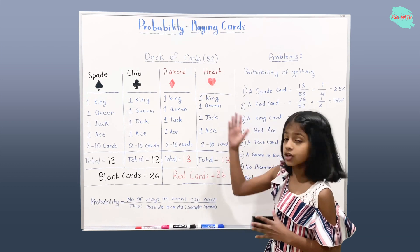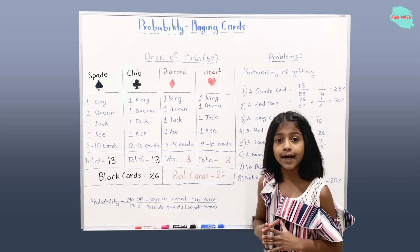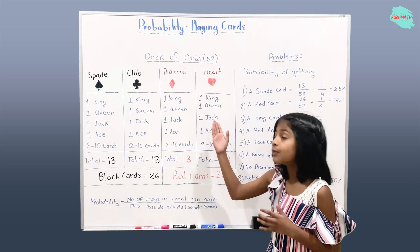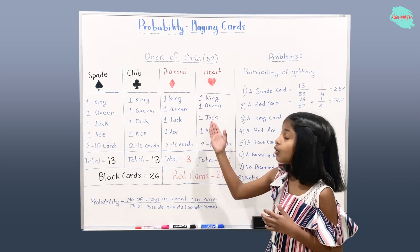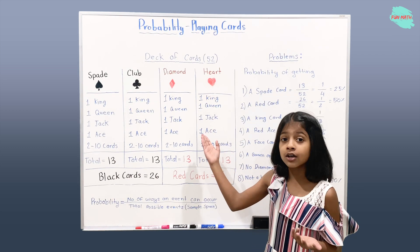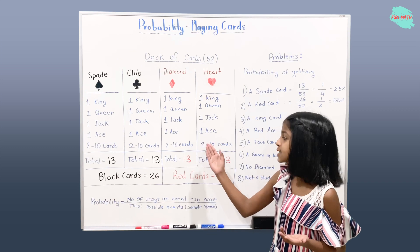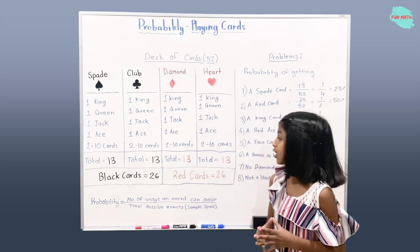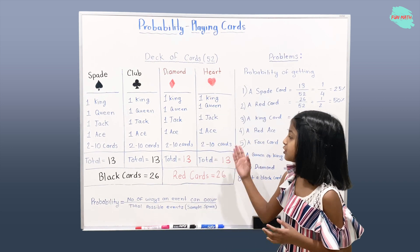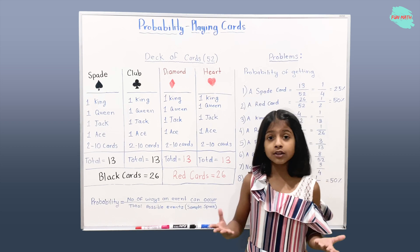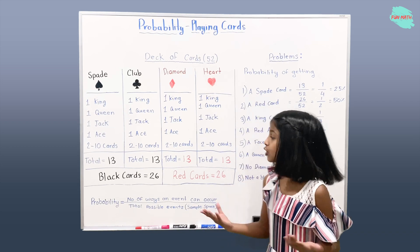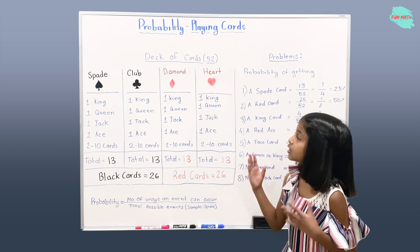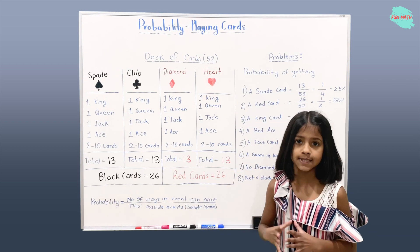In Heart Suit we have one King, one Queen, one Jack, one Ace and cards from 2 to 10. We also have total 13 Heart Cards.